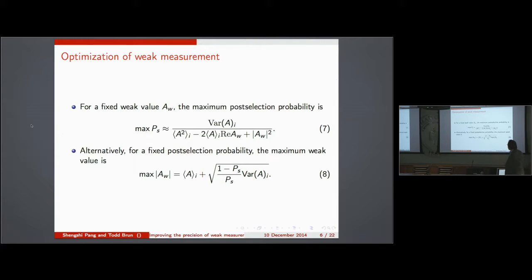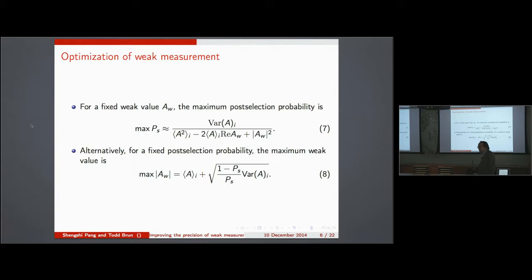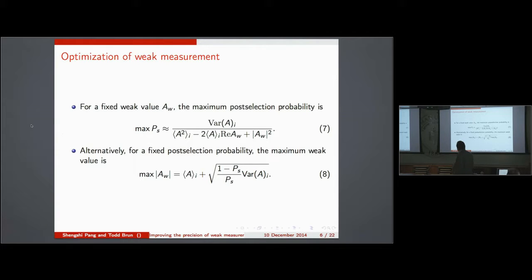One type of optimization: fix a particular level of amplification you want to achieve (staying in the linear regime) and then try to maximize the probability of success — the more successful post-selections, the more information you get about parameter G. Alternatively, you can fix the post-selection probability and instead try to maximize the amplification. Making the post-selection probability smaller allows larger amplification, and vice versa — the same trade-off we've seen before.